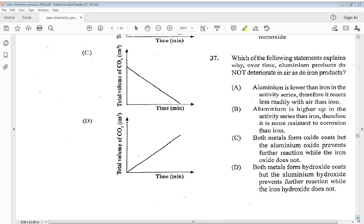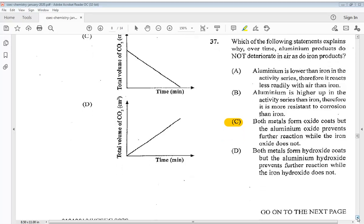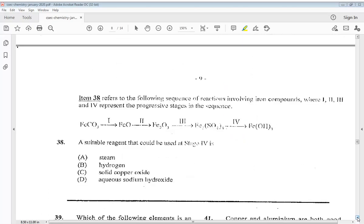Or D both metals form hydroxide coats but the aluminum hydroxide prevents further reaction while the iron hydroxide does not. So the answer for 37 would be C. Both metals form oxide coats but the aluminum oxide prevents further reaction while the iron oxide does not.